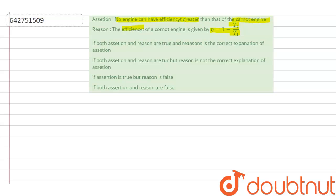If I am looking at the assertion, assertion talks about the Carnot's theorem. What does Carnot's theorem say? Carnot's theorem says that no engine can have an efficiency greater than a Carnot engine which is an ideal engine.